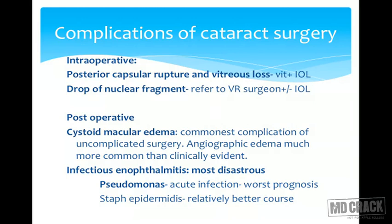Postoperatively, the main complication of uncomplicated cataract surgery is cystoid macular edema, also called Irvine-Gass syndrome, in which there is leakage from the macular capillaries and thickening of the fovea leading to decreased best-corrected visual acuity. Angiographic changes of macular edema are common after cataract surgeries but do not always translate into clinical cystoid macular edema. The most disastrous postoperative complication is infectious endophthalmitis — an infection of the inner retinal layers and vitreous, essentially an abscess inside the eye. Acute Pseudomonas infection has the worst prognosis, while Staph epidermidis has a relatively better course.